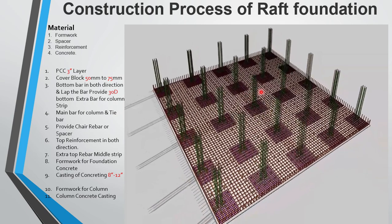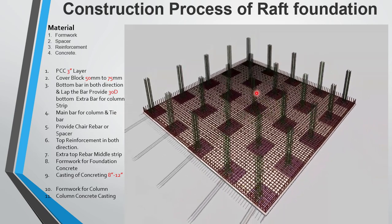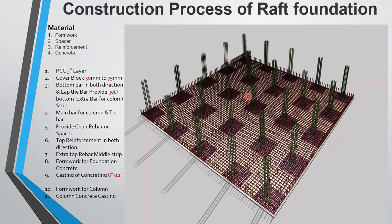This is the main reinforcement for the column. The minimum diameter of main reinforcement is 12 mm, and it depends on the design load.